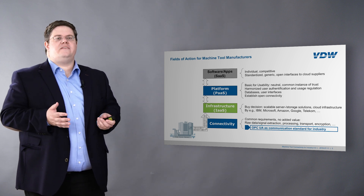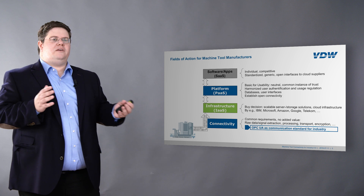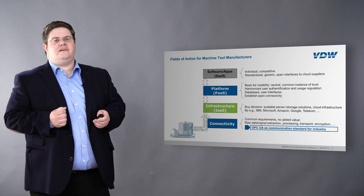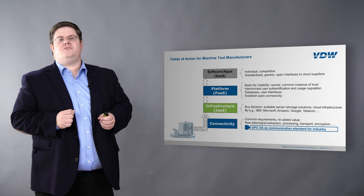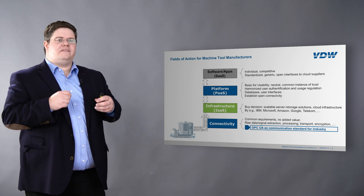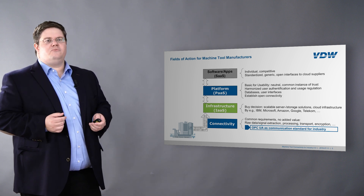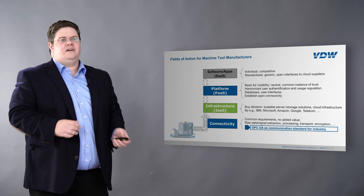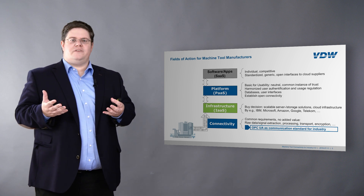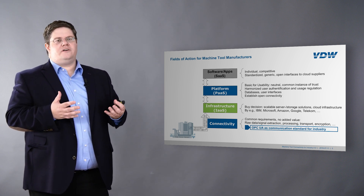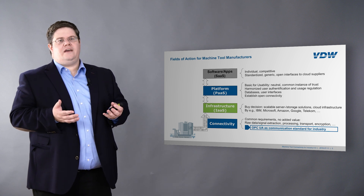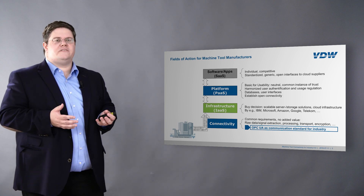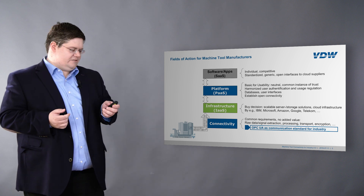When we looked at fields of action where the machine tool industry as a sector should be active, we identified a variety of stages where collaboration makes sense or maybe makes less sense. When we look at data coming from a machine tool, first we need connectivity — getting data in and out of the machine. The second level is infrastructure to transport data from the machine to wherever it is used. The third level is the platform, where data can be stored with secure access and additional services. The fourth layer is software and apps which add value to the data gained from the machine tools.